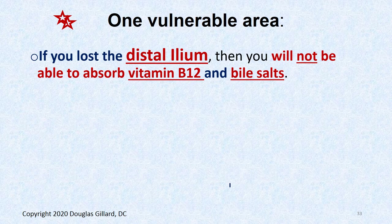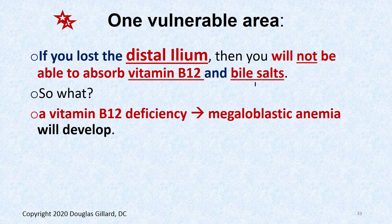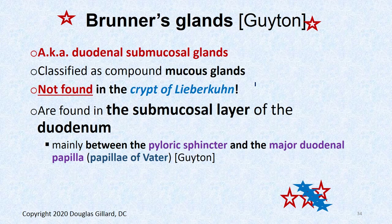One vulnerable area: if you lose your distal ileum, that's not a good thing. You can lose 50% of your intestine, but you can't lose the distal ileum without consequences. If you do, you can't absorb vitamin B12 and bile salts — you'll develop a vitamin B12 deficiency, which morphs into megaloblastic anemia. You won't make myelin properly, and you'll have all kinds of abnormal red blood cells — giant immature red blood cells that don't carry oxygen well. You'd need vitamin B12 injections to survive.